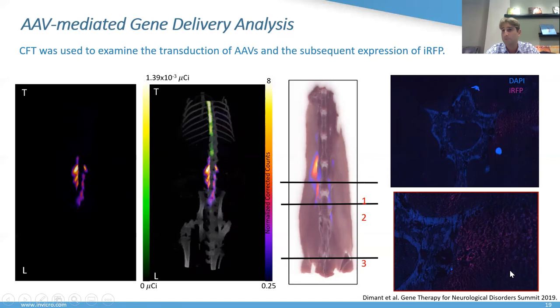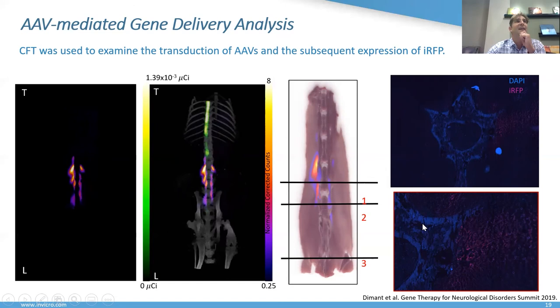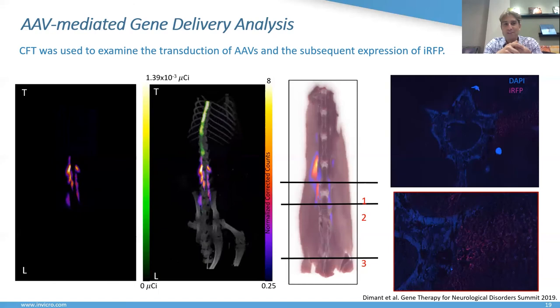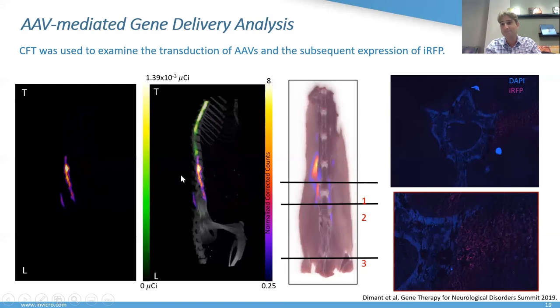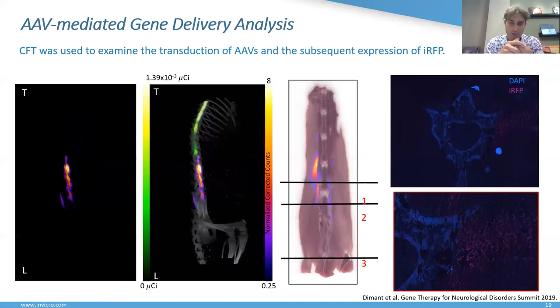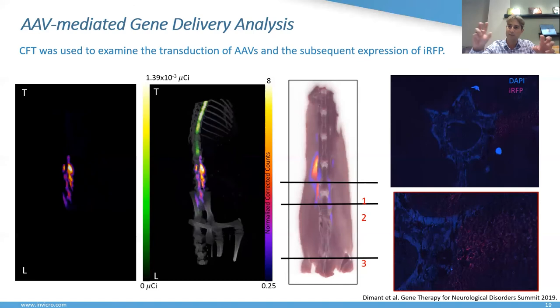There was a clear difference between AAV distribution and the subsequent IRFP expression. We confirmed the IRFP expression was completely outside the vertebra. Although the intrathecal administration was successful — we saw distribution all the way to the head — the expression was outside the vertebrae, which we confirmed by collecting sections from the same sample for microscopy. The likely reason was that the catheter remained in place for four weeks, creating a wound in the lumbar region that caused some AAVs to leak out and express in surrounding tissue.